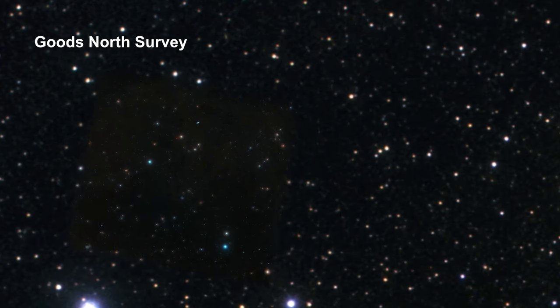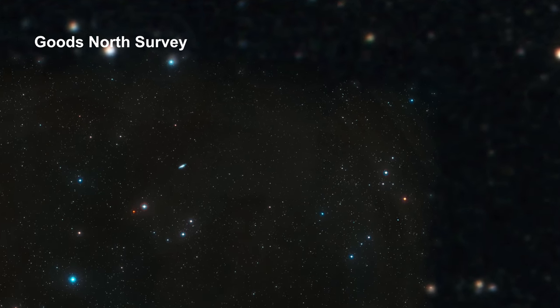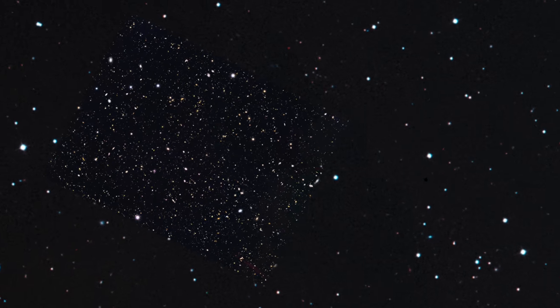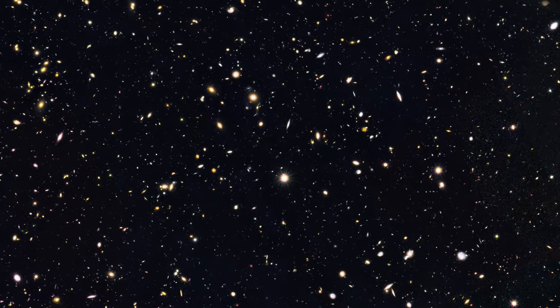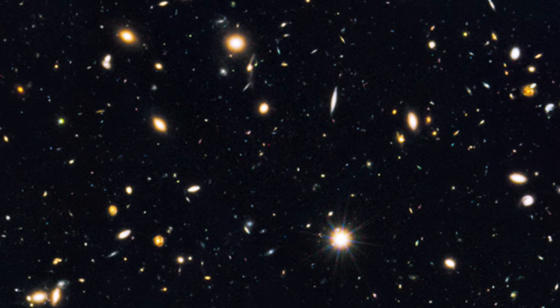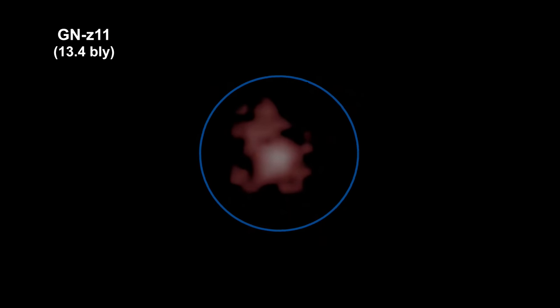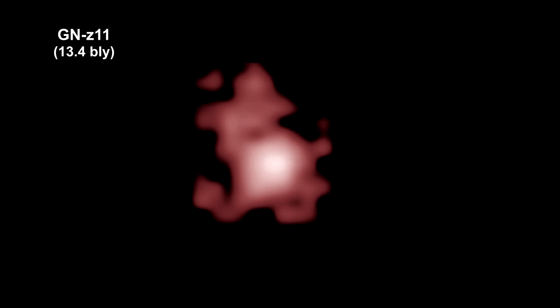The principles are the same for light traveling to us from distant galaxies. Here we are zooming into GNZ-11, the most distant object ever found. The galaxy's redshift, combined with Hubble's law, gives us the distance the light traveled: 13.4 billion light years.